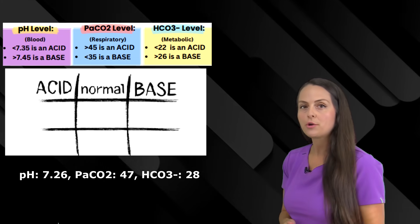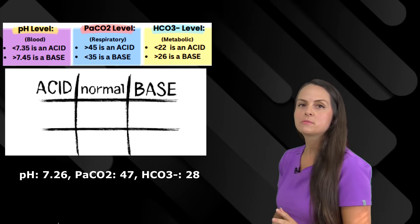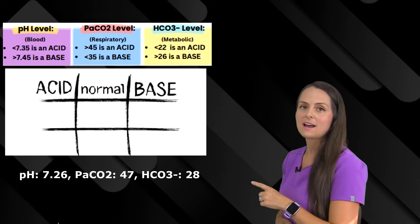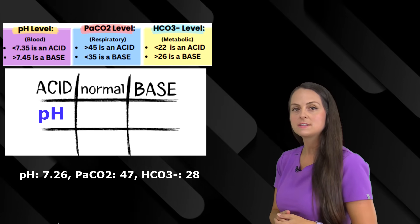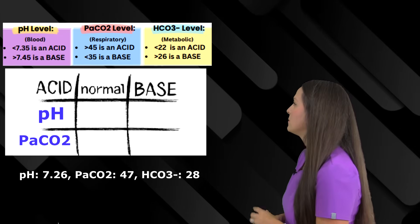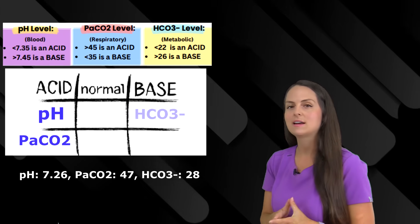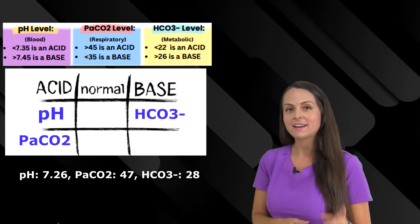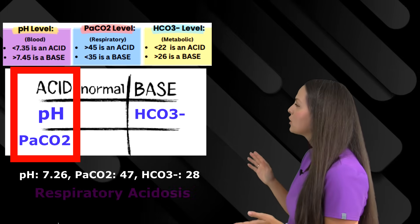We analyze the blood pH — normal is 7.35 to 7.45, we have 7.26, so that's on the acid side. We put pH under acid. Now the PaCO2 is 47 — normal is 35 to 45, this is on the high side and acidic — so PaCO2 goes under acid. Lastly, the bicarb HCO3 is 28 — normal is 22 to 26 — so this is on the basic alkaline side. We put HCO3 under base. We're looking for a vertical three in a row, and we have it with acid: pH and PaCO2, which represents our respiratory system — so we get respiratory acidosis.